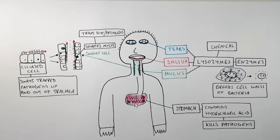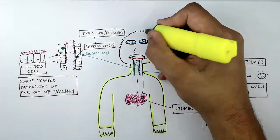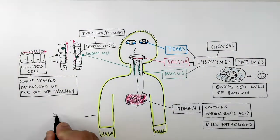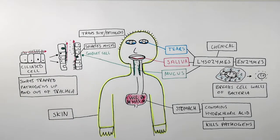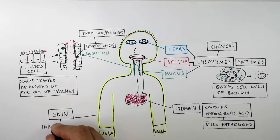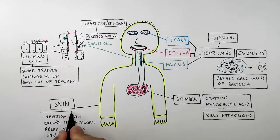Your most important physical defence against pathogens entering the body is your skin. Your skin acts as a physical barrier to prevent pathogens entering into your bloodstream. An infection only occurs if pathogens break through the skin.